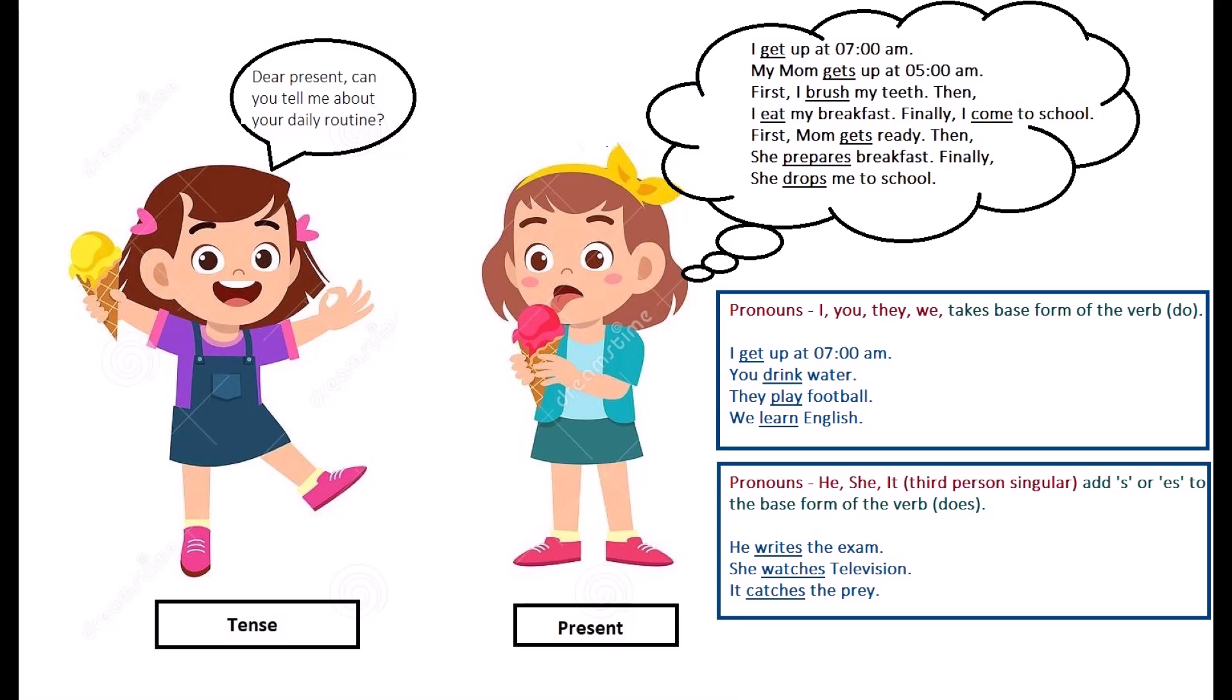And along with the pronouns he, she, it, that means the third sentence singular, we are adding S or ES to the verb. For example, he writes the exam. What is the base form? It is write. Write plus S. Then, the second one, she watches television. Watch is the base form. And along with watch, we are adding E-S. Watches. Then, it catches the prey. Again, with catch we are adding E-S. So, dear students, along with the pronouns he, she, it, that means the third sentence singular, we will be adding S or E-S to the base form of the verb.